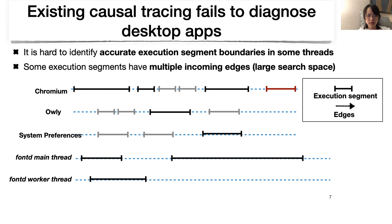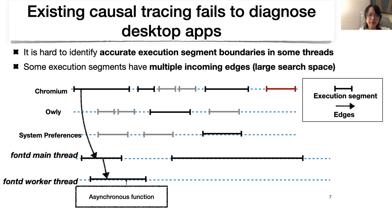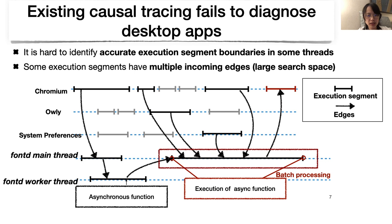This figure shows a simplified causal tracing graph for the Chromium case. Chromium sends a message to FontD, a daemon in macOS, to make fonts available. The main thread of FontD processes the message and sends a message to its work thread. The work thread invokes an asynchronous call, and the main thread executes the callback. However, this function applies batch processing of messages from multiple applications—including messages from Auli, a third-party app, and System Preferences. As a result, these unrelated applications also get connected to the trace graph, and during diagnosis we may examine many unrelated segments and draw wrong conclusions.